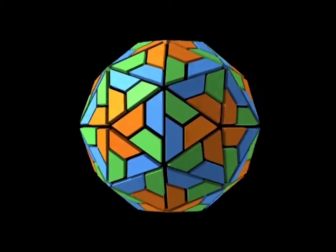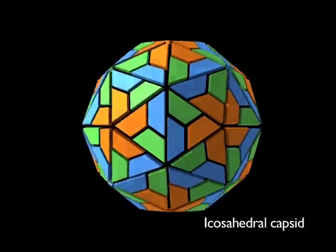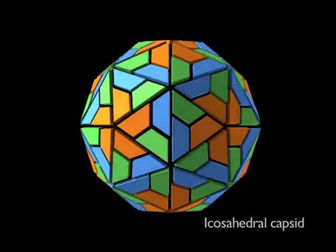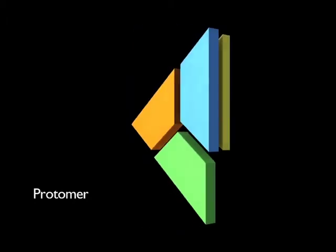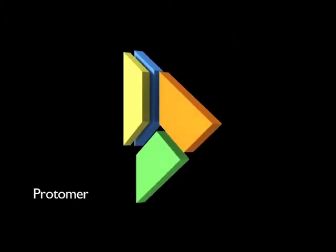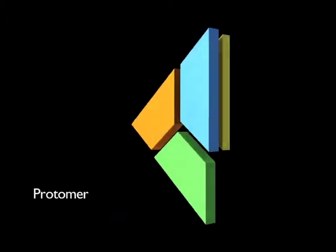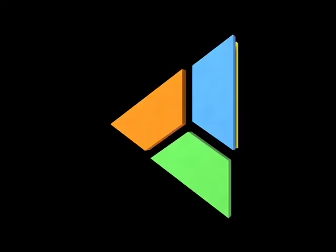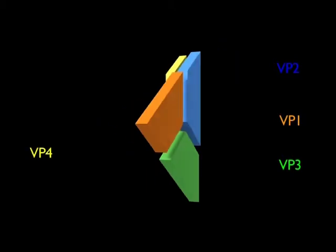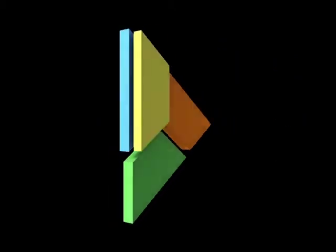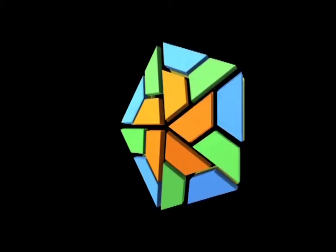The structure of the capsid is icosahedral and the proteins are arranged in protomers. A protomer is the basic building block of the poliovirus capsid. Each protomer contains one copy each of VP1, VP2, VP3, and VP4. This arrangement facilitates the stability of the virion.